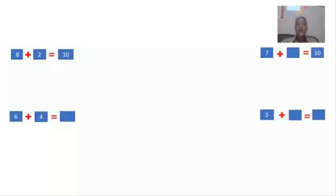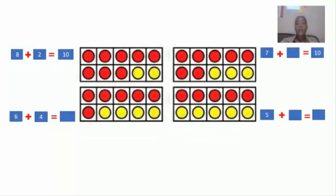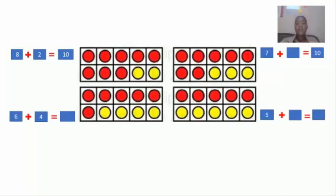Next we have 7 plus, there is a blank space. I wonder what number we can write there to complete number 10. So, we can reference by our 7 red dots and how many yellow dots do we have? 3, that is correct. So, 7 plus 3 equals 10.